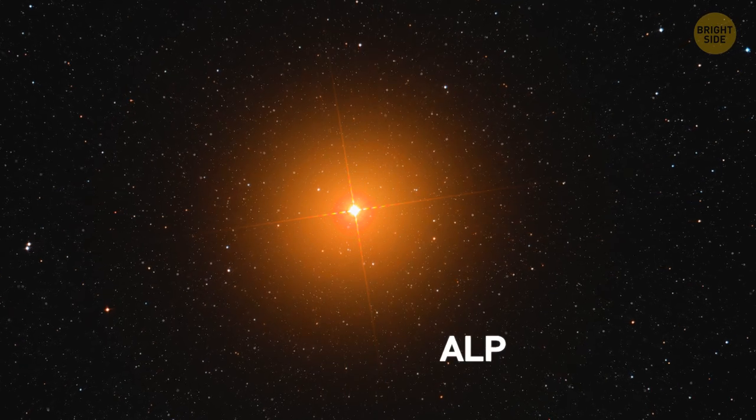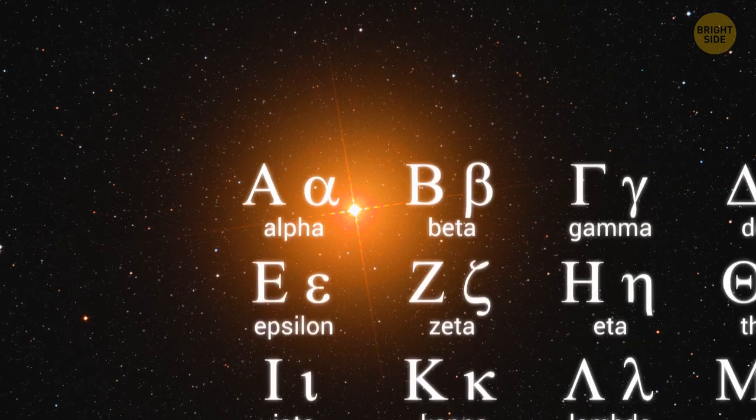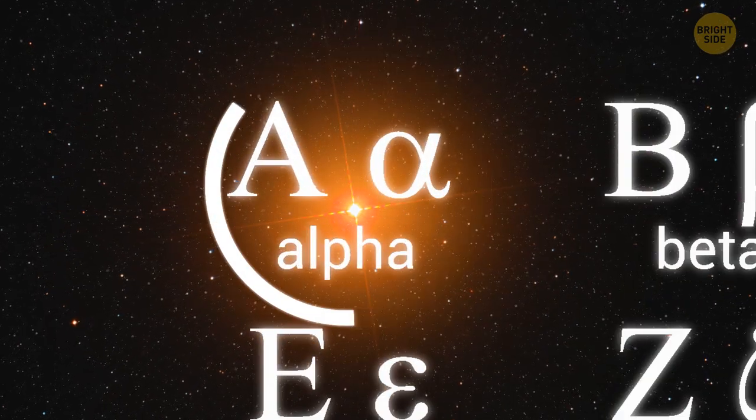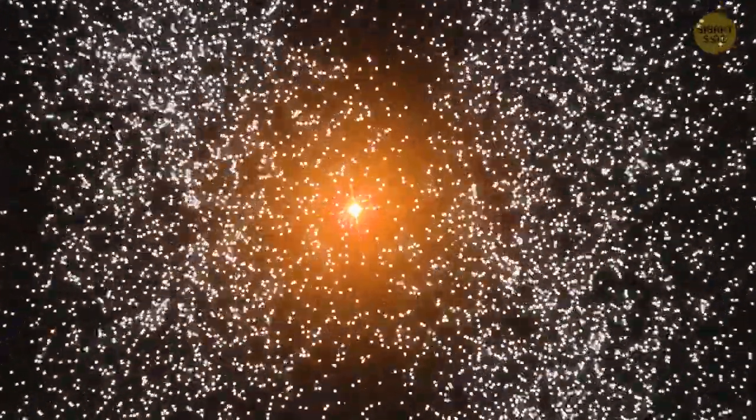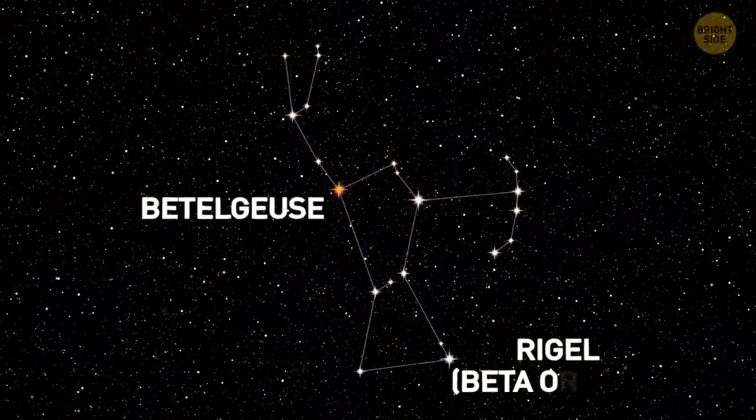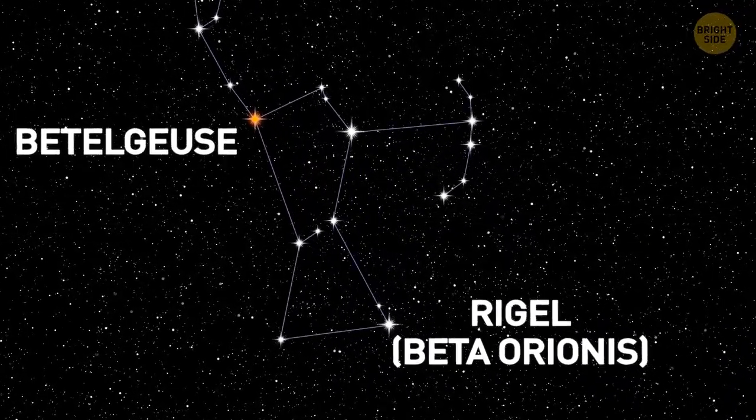Betelgeuse is also named Alpha Orionis, another Greek letter designation. So, we should conclude that Betelgeuse is the brightest star in Orion, right? Wrong. It's the second brightest star in its constellation. Rigel, or Beta Orionis, is the brightest one in that region. Figure that one out.